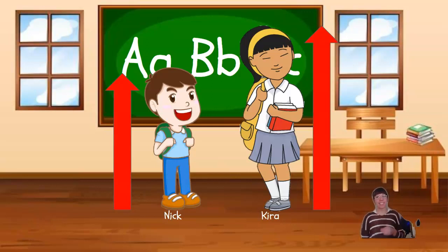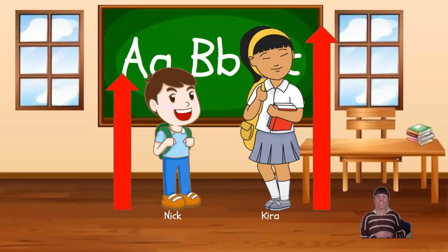There is less distance from the bottom of Nick's feet to the top of his head than there is for Kira. Nick is shorter and Kira is taller.